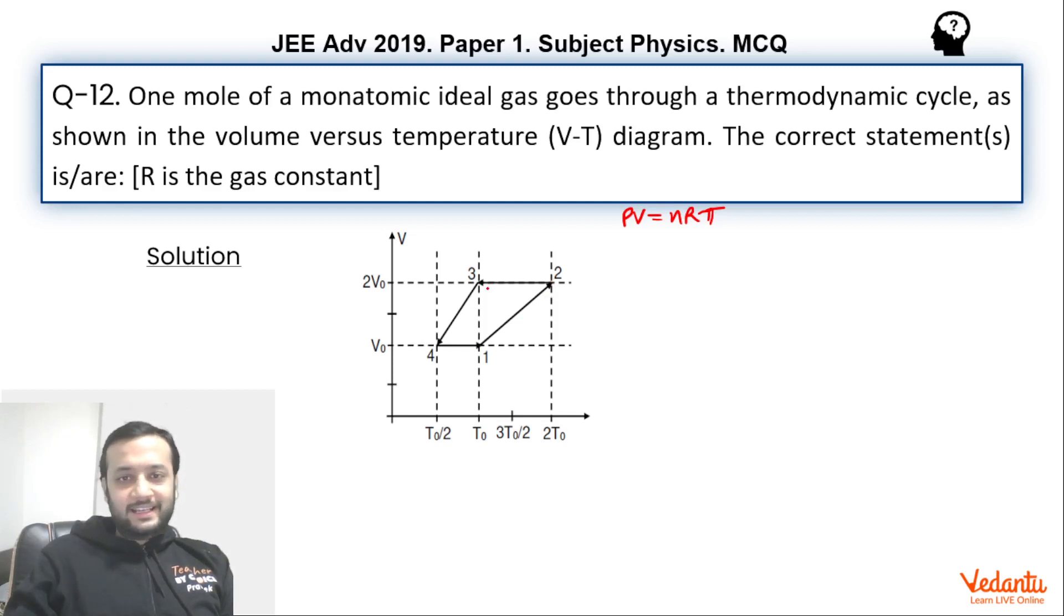2-3 is clearly isochoric, volume is constant. Same logic for 3-4 we can apply. If you see at point 3 as well as 4, V by T is constant, and hence this was also isobaric. And 4 to 1 again is isochoric. So predominantly there are two types of processes here. In the question, there are two types of processes: isobaric and isochoric. So here this is isobaric, P constant. There is also P constant. And the remaining two are isochoric.